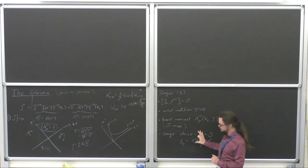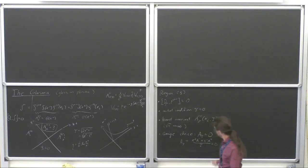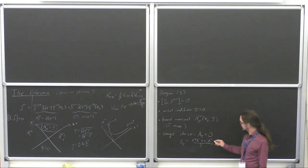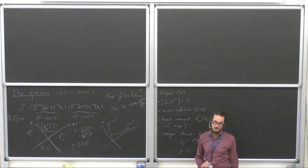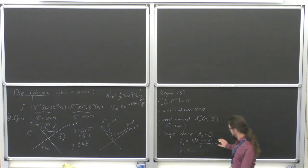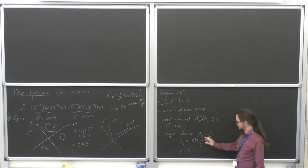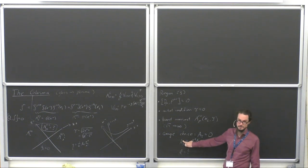So we will be using this gauge choice, but then the other component A_eta will not be zero. We cannot have both of them zero — for this problem we cannot have both zero. A_eta will have to be non-zero once we have chosen A_tau to be zero. This is the gauge in which we work.